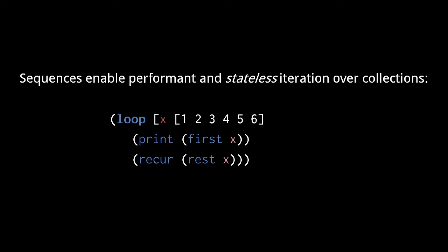Note that, unlike a conventional iterator, a sequence has no mutable state. Each call to rest returns a new sequence, and every sequence instance is immutable.